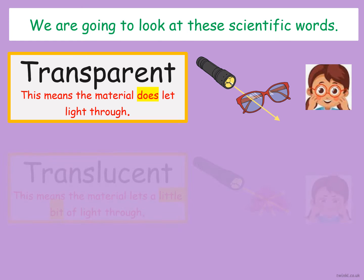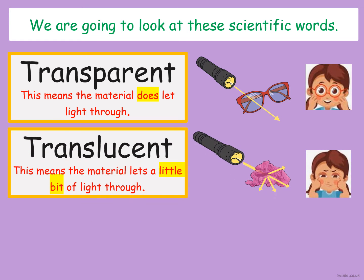The second word is translucent. And the word translucent means the material lets a little bit of light through. So if you have a look at the torch, you can see that only a little bit of light is coming through the material. You have to look really closely to see the light coming through the material.